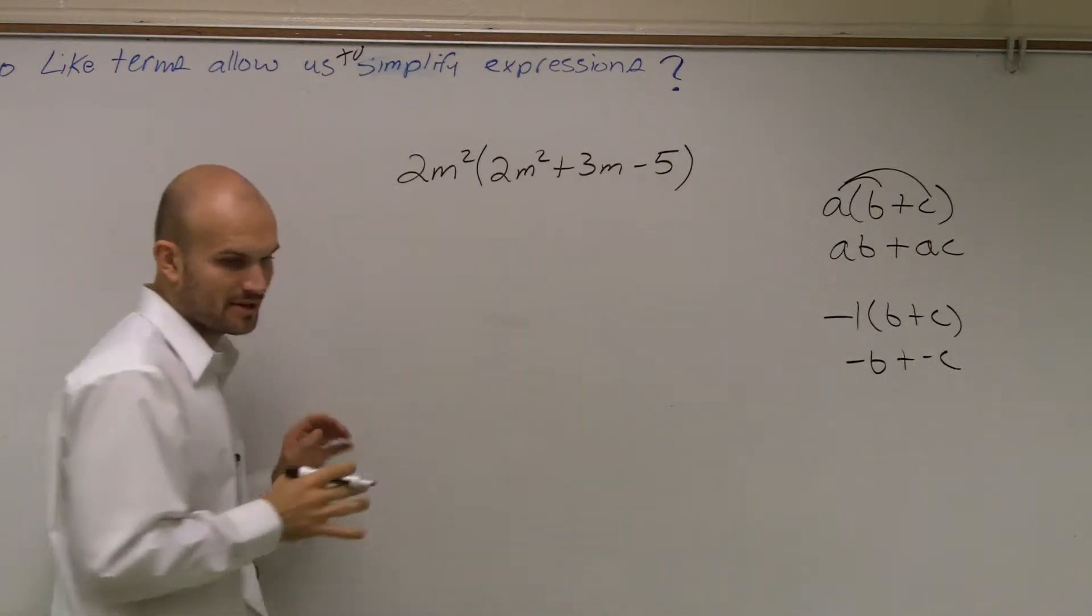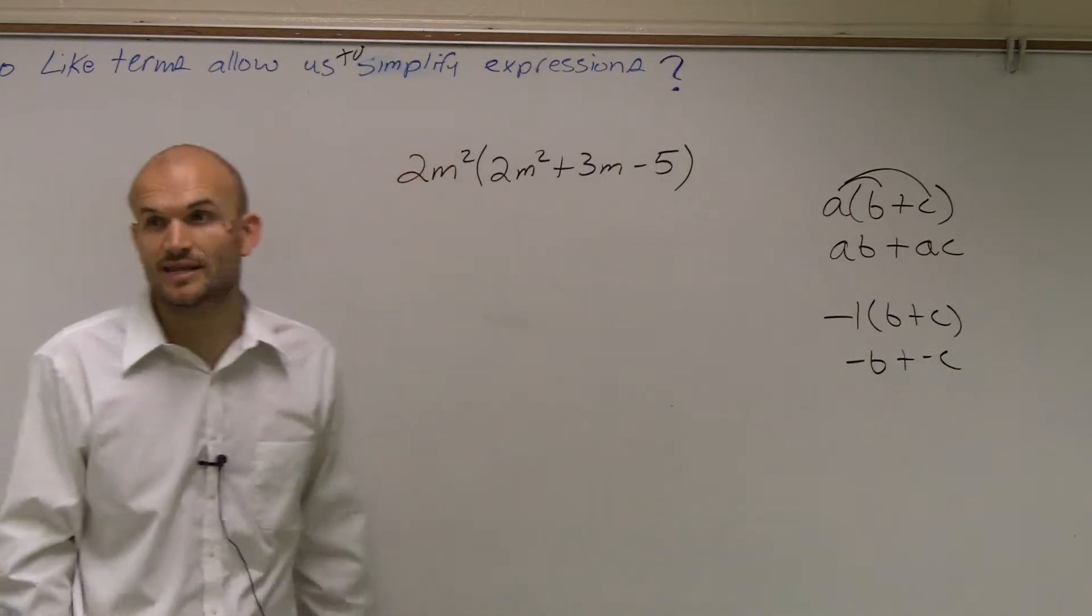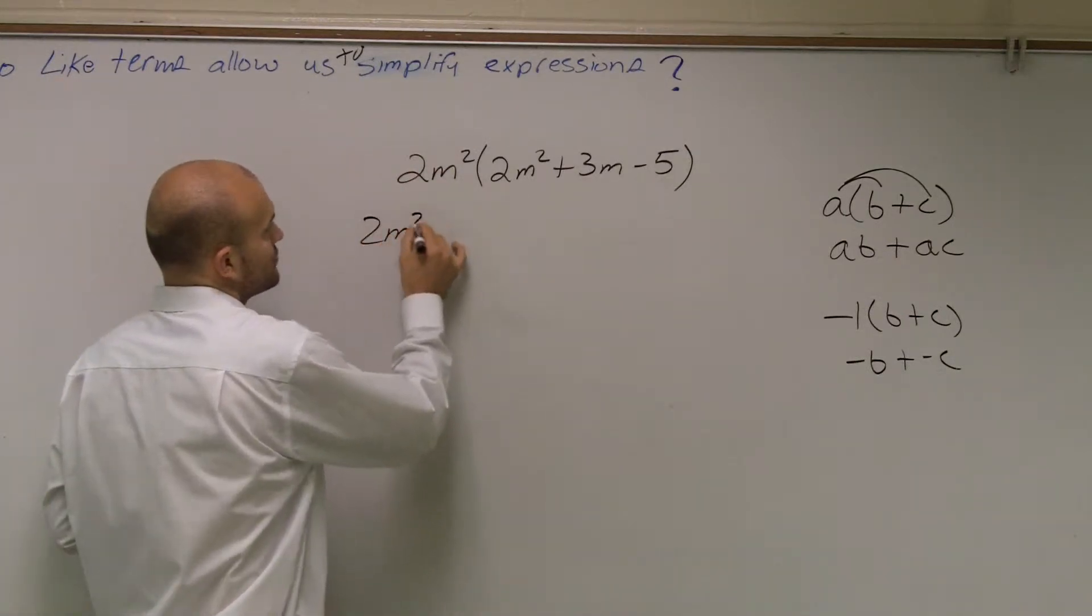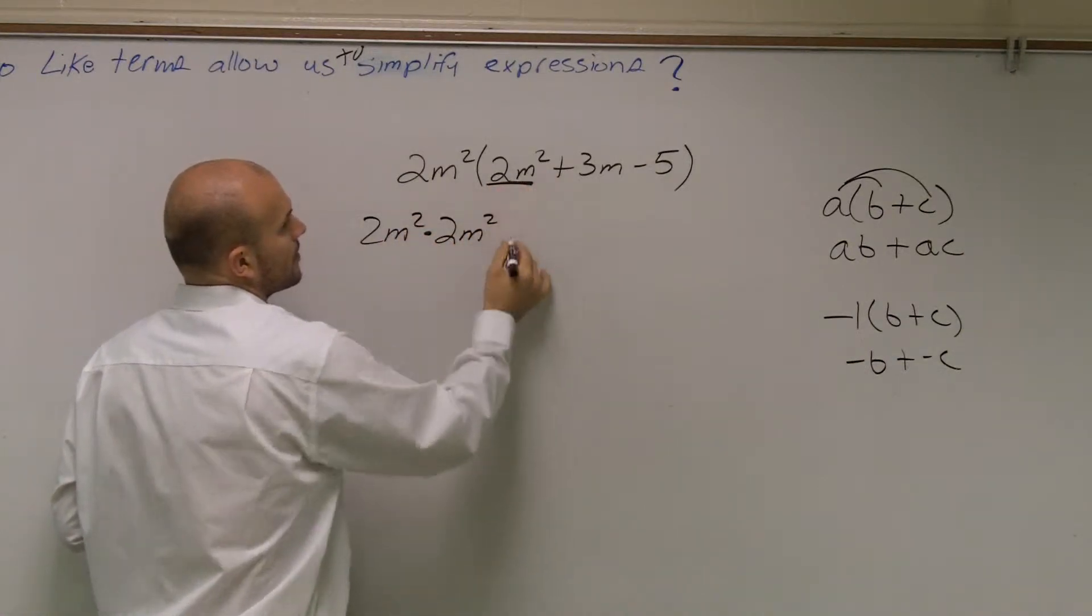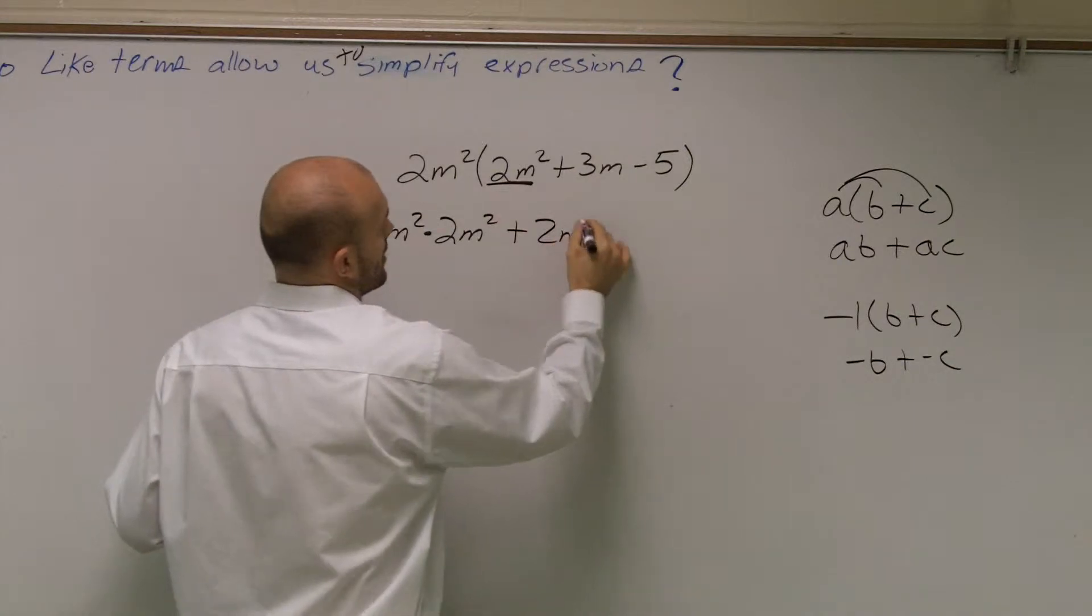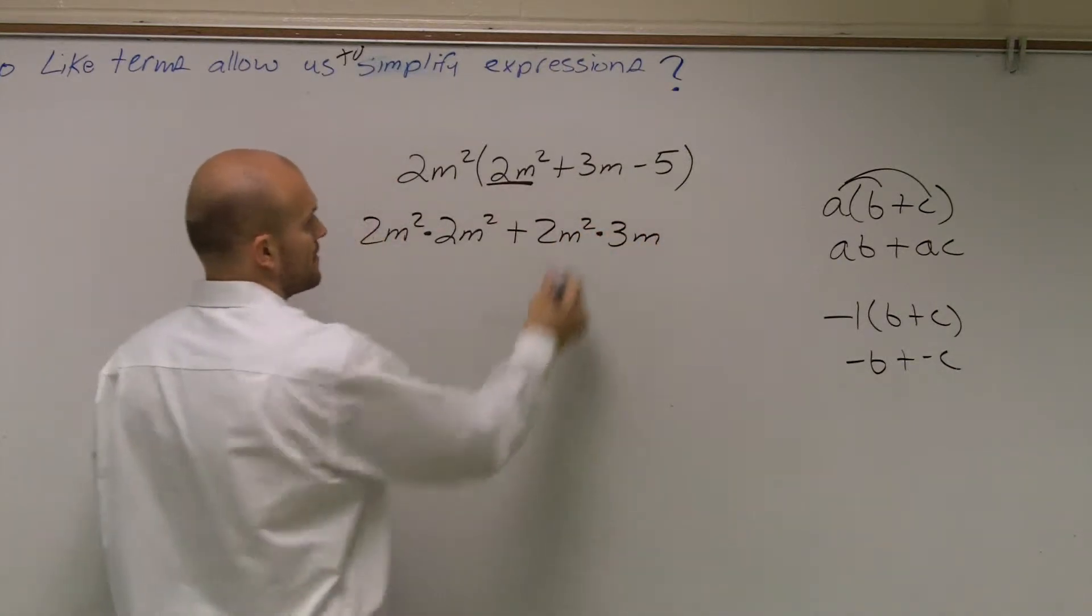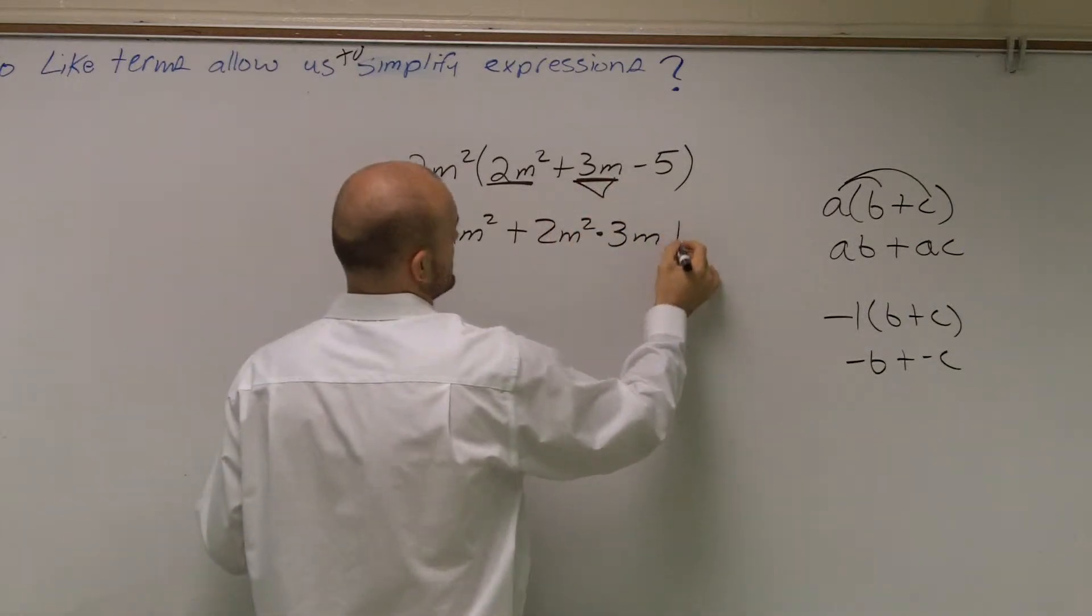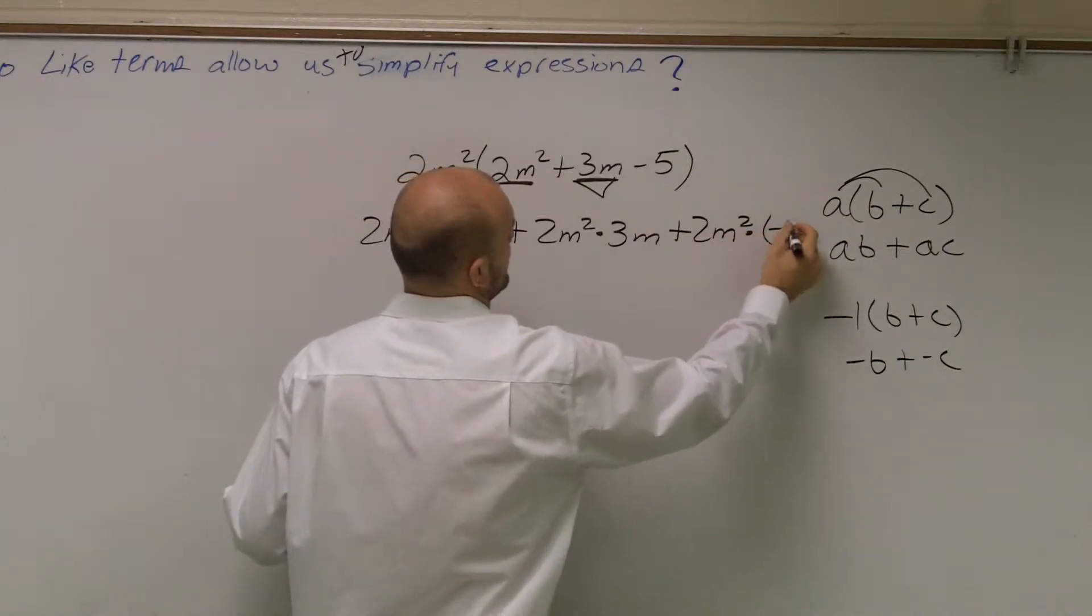So when I'm doing this, what we notice is we have a 2m squared outside the parentheses, right? So what that means is 2m squared times 2m squared plus 2m squared times 3m, and then plus 2m squared times negative 5.